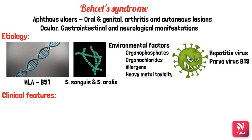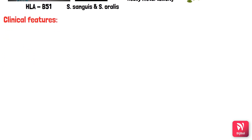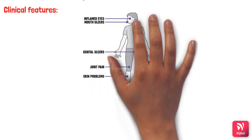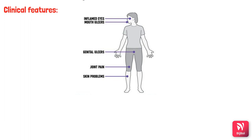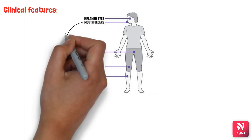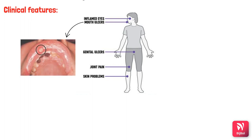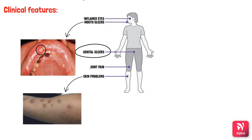The main clinical features of Behçet's syndrome are oral and genital ulcers, arthritis, skin problems, and ocular lesions. Oral ulcers mostly resemble aphthous ulcers — gray membrane with an erythematous halo — and are very painful. Genital ulcers are smaller ulcers seen in and around the genitalia, around the scrotum and labia majora.